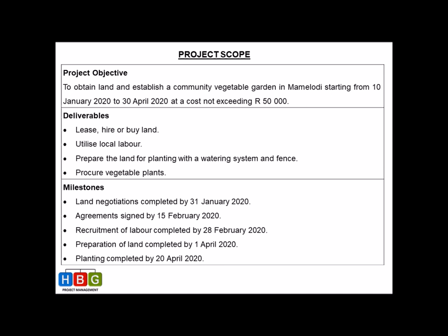Then we look at milestones. A milestone is a quality checkpoint along the way where you check that your deliverables have been achieved by a certain date. Milestones are always linked to a date, and I derive them from my deliverables. Here you can see: land negotiations and agreements, recruitment of labor, preparation of the land must be completed, and planting completed — all with specific dates attached to them.